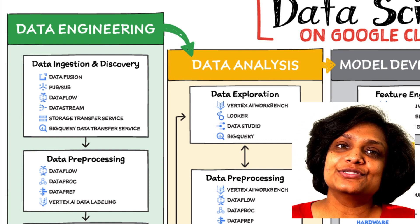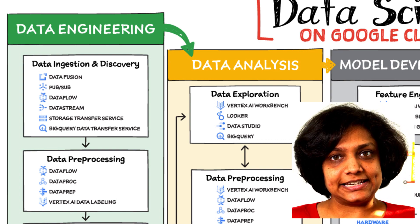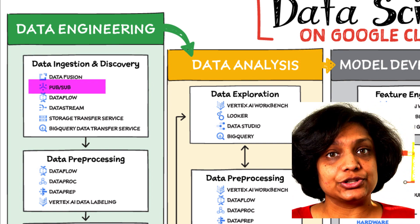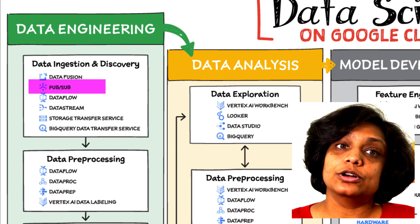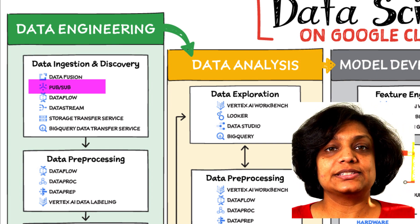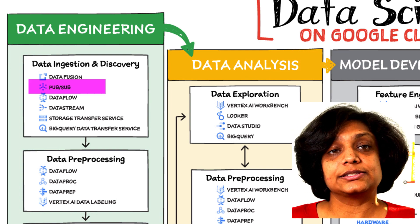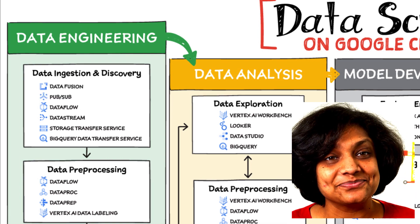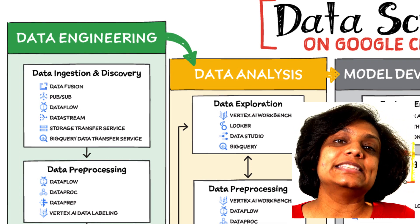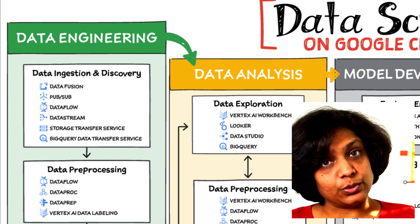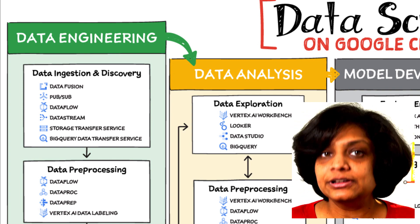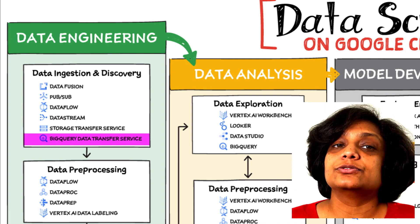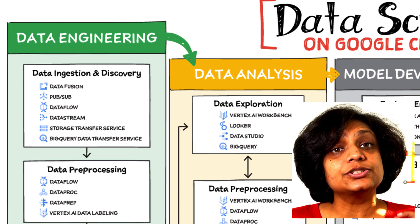If you're looking for a scalable messaging system to help you ingest data, consider Cloud Pub/Sub — a global, horizontally scalable messaging infrastructure. Cloud Pub/Sub was built using the same infrastructure components that enable Google products, including Ads, Search, and Gmail, to handle hundreds of millions of events per second. If you want an easy way to automate data movement to BigQuery, a serverless data warehouse on Google Cloud, look into the BigQuery Data Transfer Service. For transferring data to Cloud Storage, take a look at Storage Transfer Service.